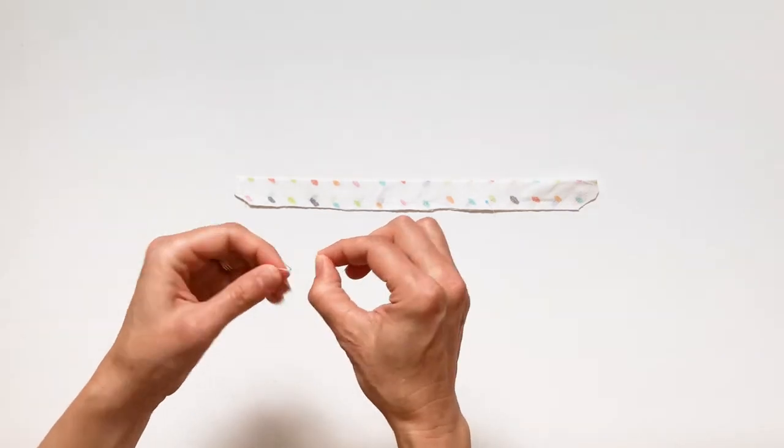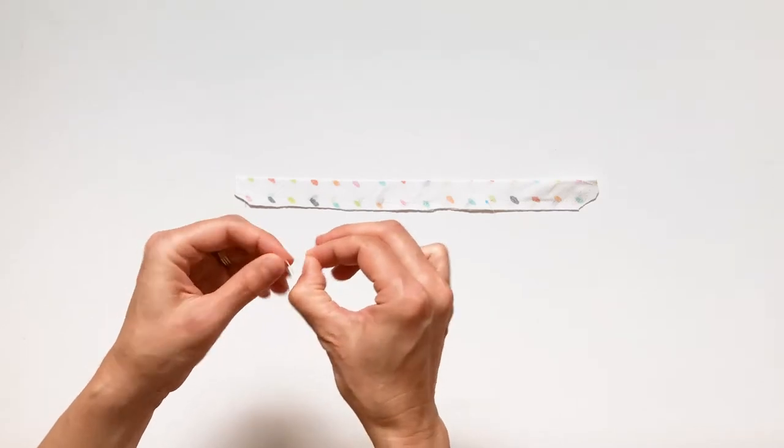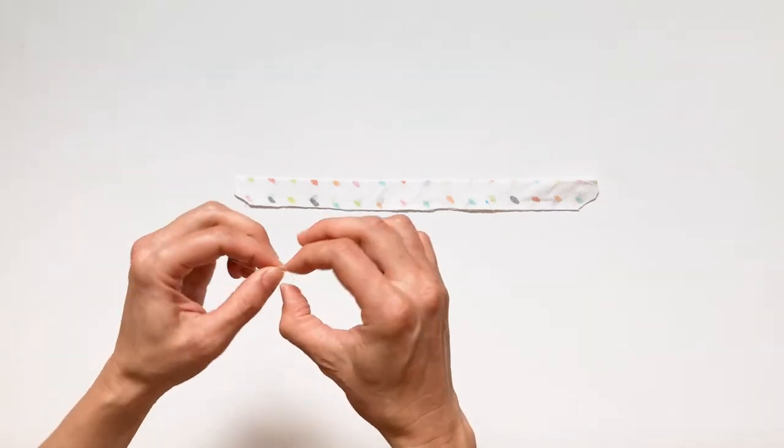So those knots are going to be right on top of each other, and there are going to be three of them. So let's do that.